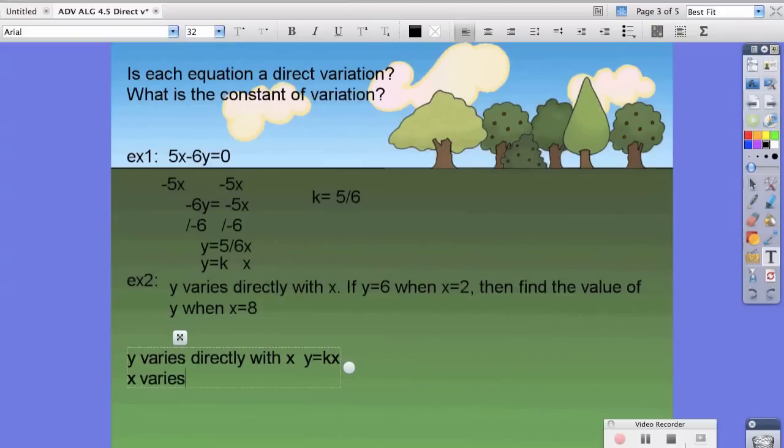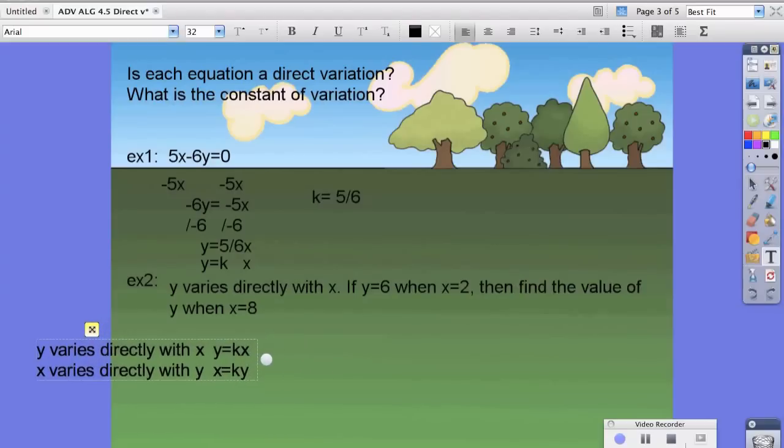x varies directly with y should look like x equals ky. Because whichever form or whatever variable is mentioned first, that's the one that goes before the equal sign in our equation.